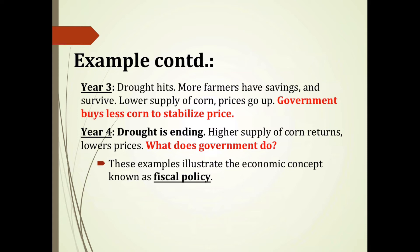We can extend our farmer scenario out one additional year. In year four, the drought from year three ends. As a result, the higher supply of corn returns, which predictably lowers prices. The government should respond accordingly, as they did in year two. These examples illustrate the economic concept known as fiscal policy. Keynesian economic theory differs from classical theory because the government is directly involved in smoothing out the market's natural ups and downs — that involvement is also known as fiscal policy. They are one and the same.